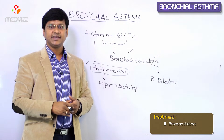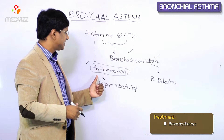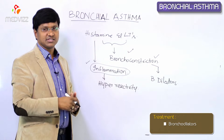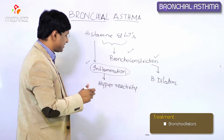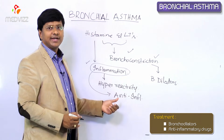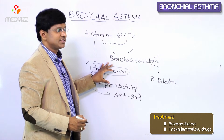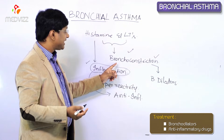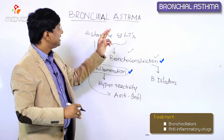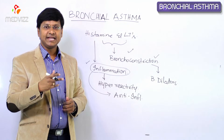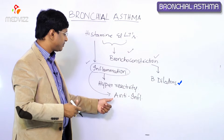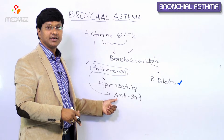The second problem in bronchial asthma is inflammation of the airways, caused by mediators such as histamine and leukotrienes from the mast cells. For this, the other group of drugs required is anti-inflammatory drugs. If you give anti-inflammatory drugs along with bronchodilators, we can overcome both bronchoconstriction and inflammation, thereby reducing difficulty in breathing in patients with bronchial asthma.